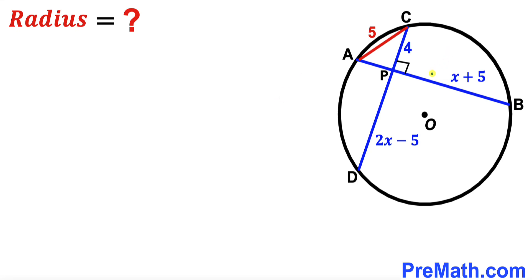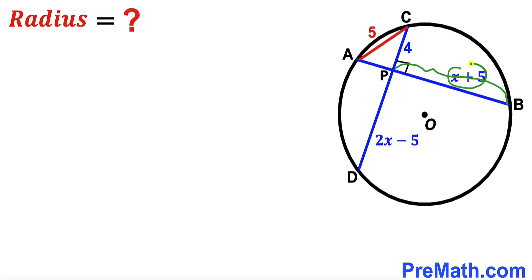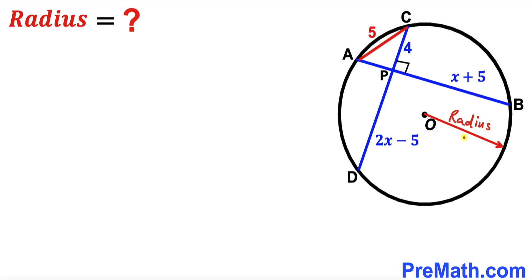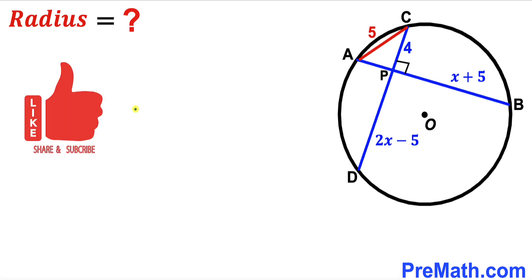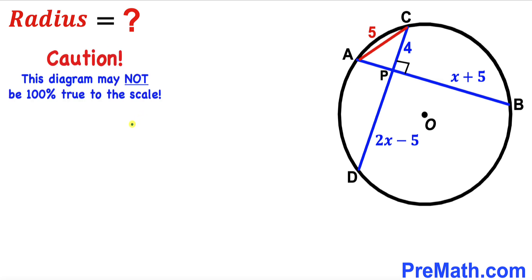Welcome to PreMath. In this video we have two chords AB and CD, and they intersect each other at point P. For the circle with center O, segment PC is 4 units, segment AC is 5 units, and AC is our chord. Segment PB is represented by X plus 5, and segment PD is 2X minus 5. Our task is to calculate the radius of this given circle. Please keep in mind that this figure may not be 100% true to scale.